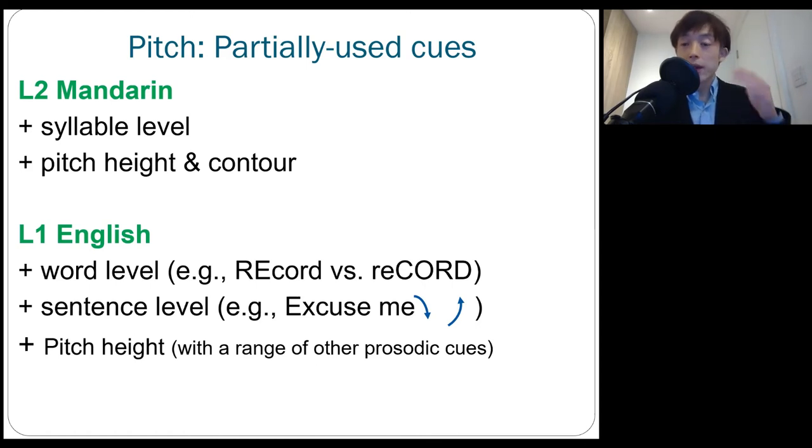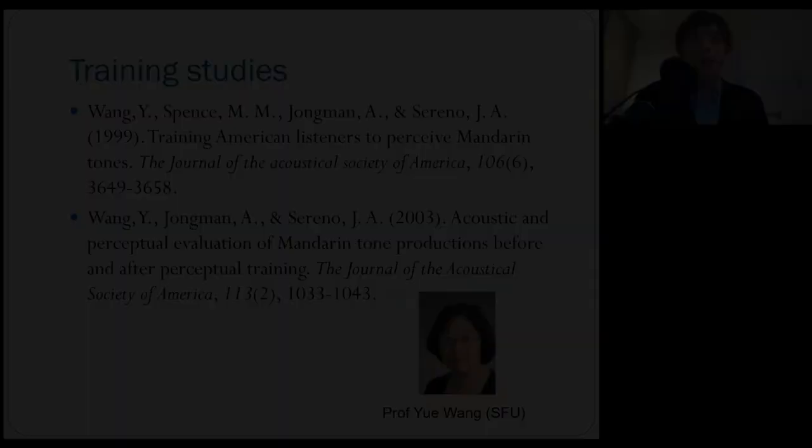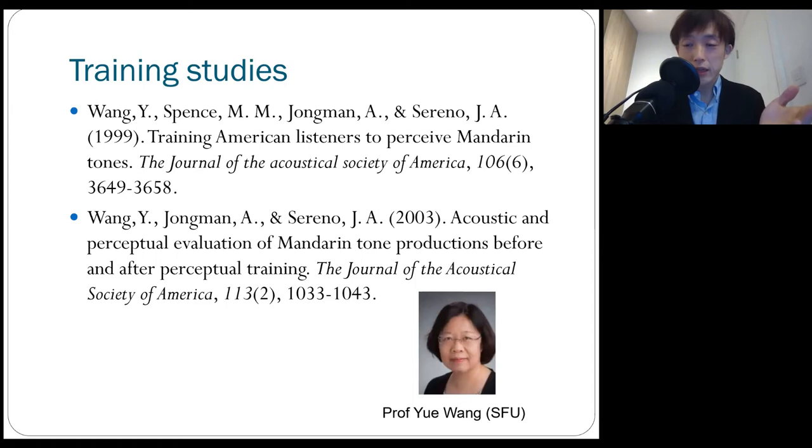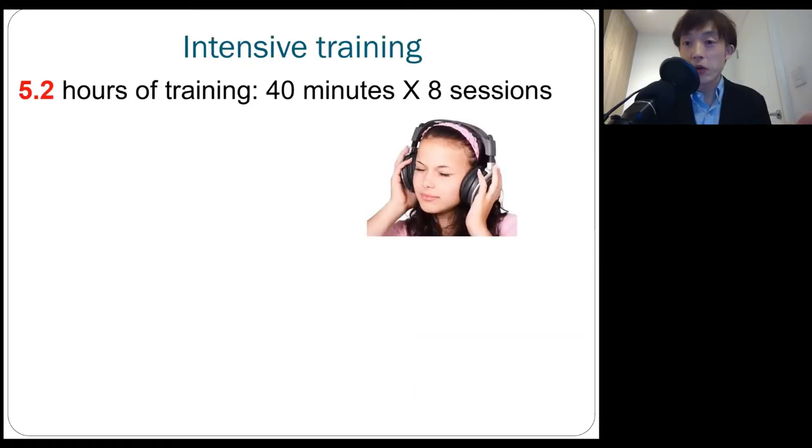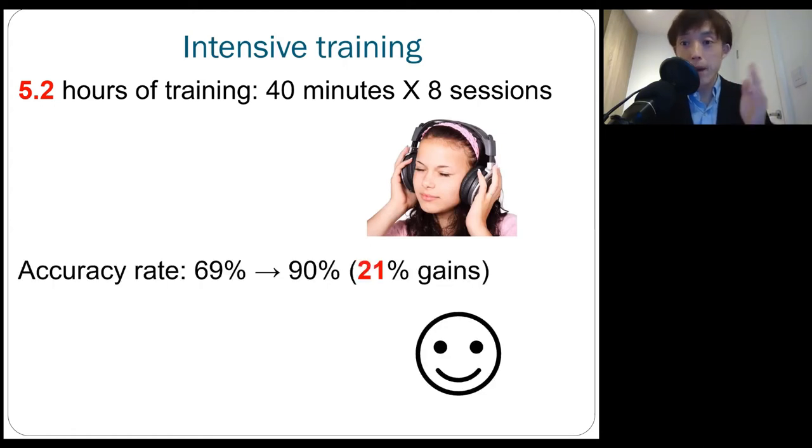Therefore, in summary, in Mandarin, pitch information is fully used, height and contour. But in English, pitch is kind of used, so only for height, and that's just one of these primary cues. Therefore, if you take a look at the training studies, when native speakers of English receive some kind of intensive training, for example, five 2-hour sessions of training, the performance could get better to a significant degree from 69%, which is kind of chance level, all the way to 90%, which is quite native-like, resulting in 21% of gains.